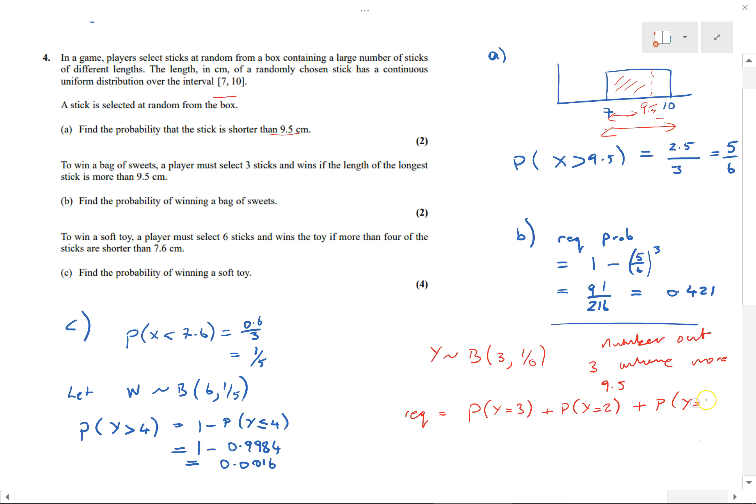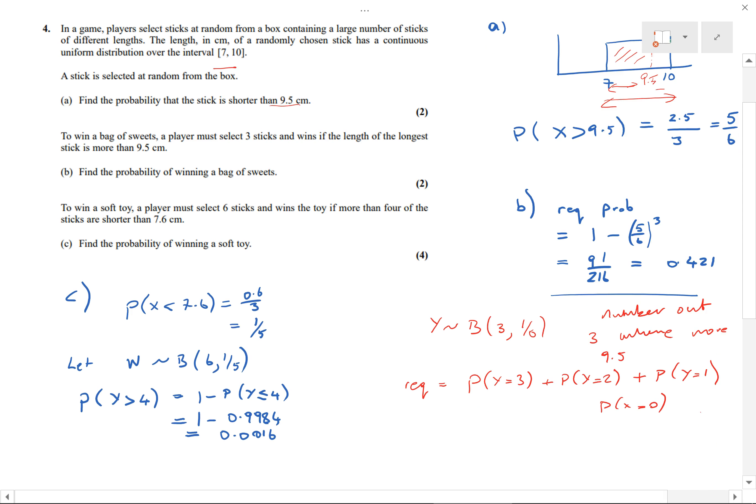Plus the probability that only one of them is greater than 9.5. Two of them are shorter than 9.5, but the longest one is greater than 9.5, because Y equals 1 would be that one. In fact, the only one it can't be is zero, because if we had zero then none of them are greater than 9.5, so the longest one is less than 9.5. So not that one.